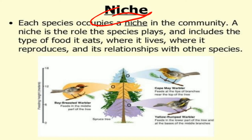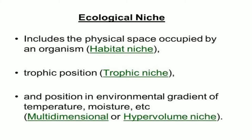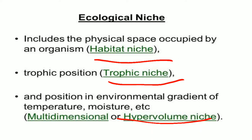Each species occupies a niche in the community. A niche is the role that a species plays in the ecosystem, and includes the types of food it eats, where it lives, where it reproduces, and its relationships with other organisms. The aspects of the niche include the habitat niche, the trophic niche, and the hyper-volume niche. The spatial or habitat niche denotes the actual physical place occupied by the organism — where exactly the organism exists.